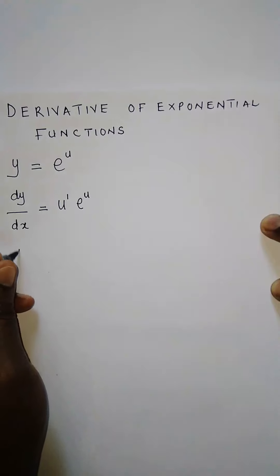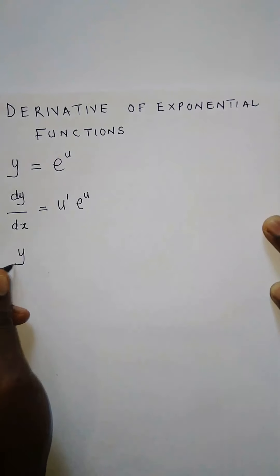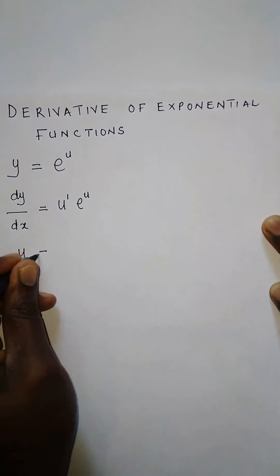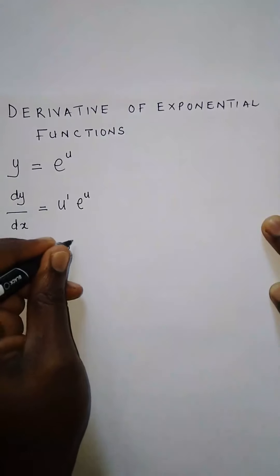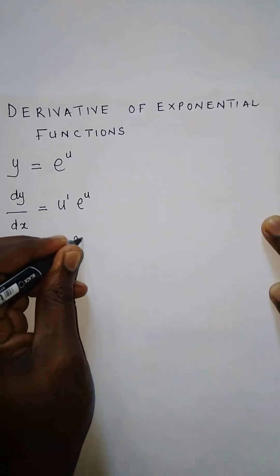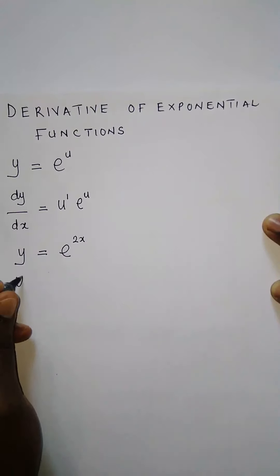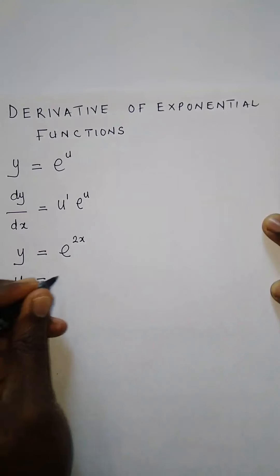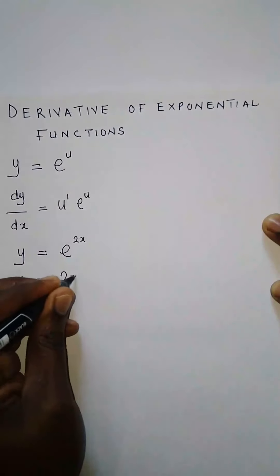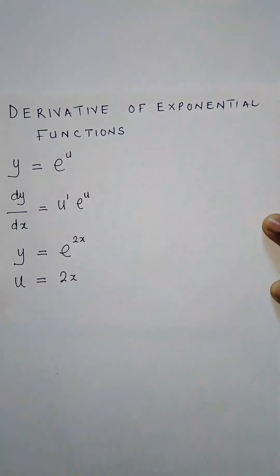Now let's have an example. If we have y is equal to e to the power 2x, and we want to find dy/dx, we first identify our u. Our u is equal to 2x, which is a function of x. So we're going to find du/dx.